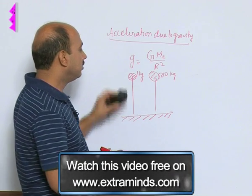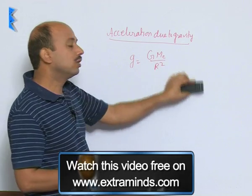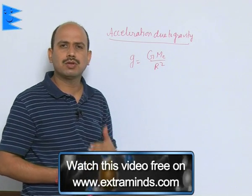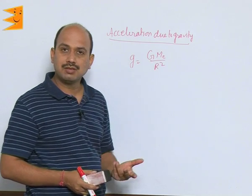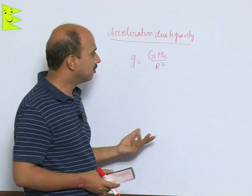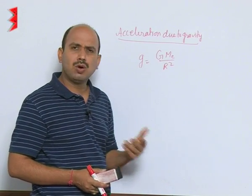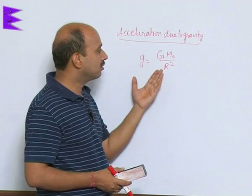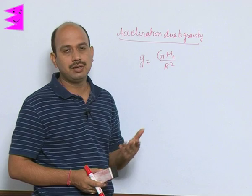But acceleration due to gravity is different, g is different for the different planets, even for the satellite, natural satellite moon. Moon has got the lesser mass as compared to Earth. So its acceleration due to gravity will be less, whereas other planets like Jupiter, Saturn, Mercury, all these planets have got different masses and different radii. So obviously, their acceleration due to gravity will be different.